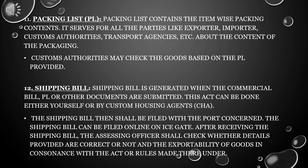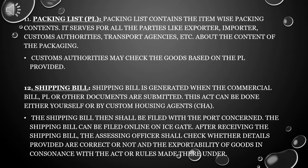Twelfth, Shipping Bill. The Shipping Bill is generated when the commercial invoice, Packing List, or other documents are submitted. This can be done either yourself or by Custom House Agents. The shipping bill shall then be filed with the port concerned and can be filed online on ICEGATE. After receiving the shipping bill, the assessing officer shall check whether the details provided are correct and verify the exportability of goods in consonance with the applicable act or rules.